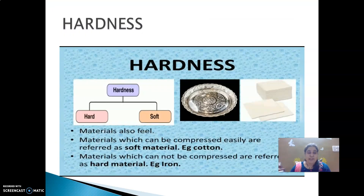The next property is hardness. Some materials are very hard whereas some others are soft. Materials which can be compressed easily are referred to as soft materials — for example, cotton. Materials which cannot be compressed are referred to as hard materials — for example, iron. Do you know which is the hardest material? Diamond is the hardest known material. Diamond can cut even glass. Certain soft solids can be easily powdered just by pressing — for example, chalk is a soft material. Cotton is so soft because it traps a lot of air in it.